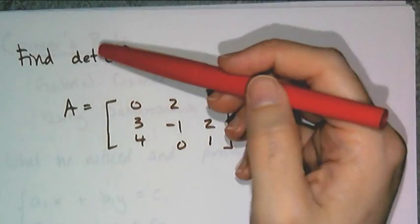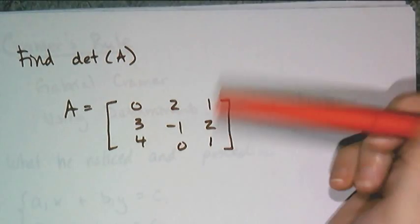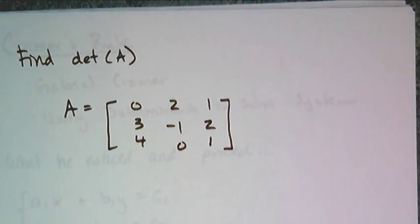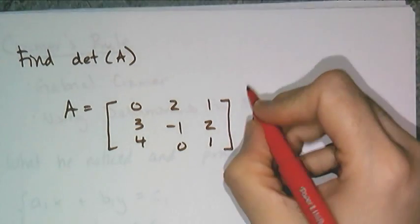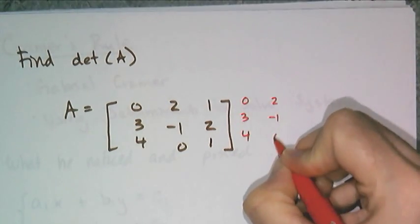So I want to find the determinant of A. Given that A is this matrix here, and there are three main steps. First step is to rewrite the first two columns. 0, 3, 4, 2, negative 1, 0.